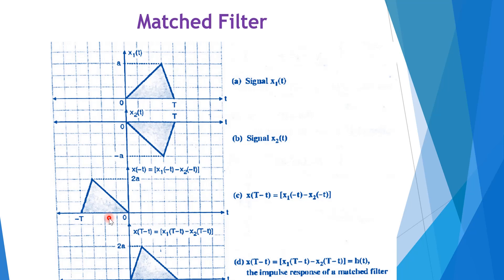We take input signal x₁(t) with amplitude A over time period 0 to T, and a second signal x₂(t) with amplitude −A over the same time period 0 to T. We can then find x(t − T) = x₁(−t) − x₂(−t).